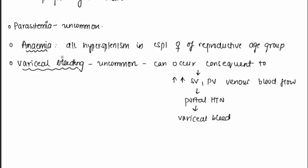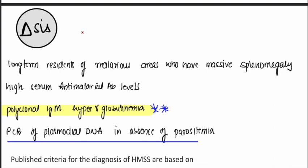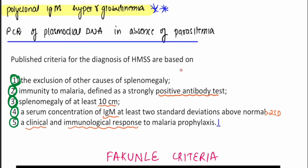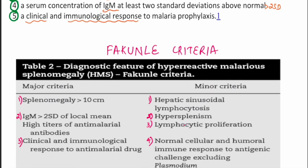HMS is suspected in long-term residents of malaria-endemic areas with massive splenomegaly and high serum anti-malarial antibodies. The five preferred diagnostic criteria are: exclusion of other causes of splenomegaly, strongly positive anti-malarial antibody test, splenomegaly of at least 10 centimeters, serum IgM more than two standard deviations above normal (polyclonal IgM hypergammaglobulinemia is a characteristic feature), and clinical and immunological response to anti-malarial treatment. There is also the Fakunle criteria with three major and five minor criteria.